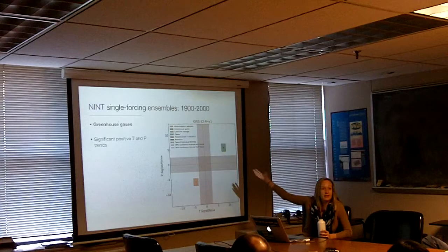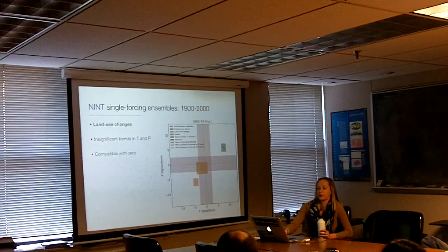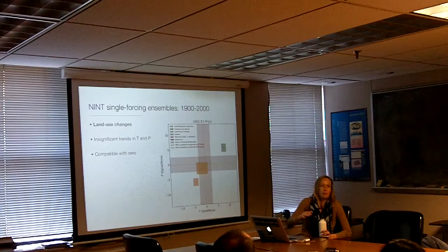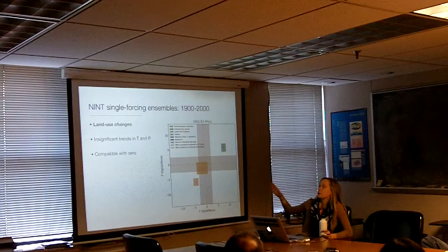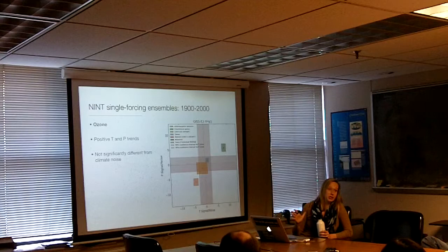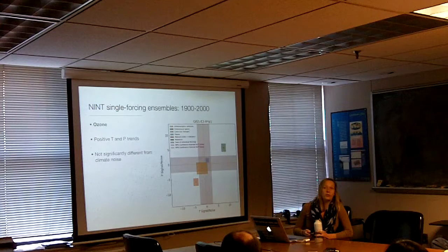Greenhouse gases show significant positive temperature and precipitation trends. Land use changes don't really do anything — not saying they don't do anything period, but they don't do anything with this very crude global measurement. They've got insignificant trends with respect to noise and are compatible with zero. To characterize the noise, this is just for GIST: there are five ensemble members for each simulation, and this box is a measure of the ensemble uncertainty. It's only for GIST models.